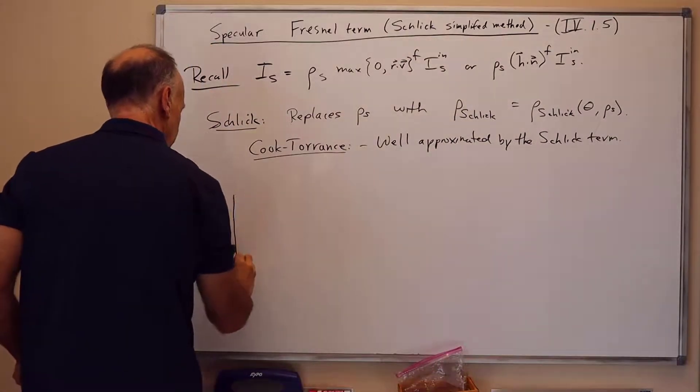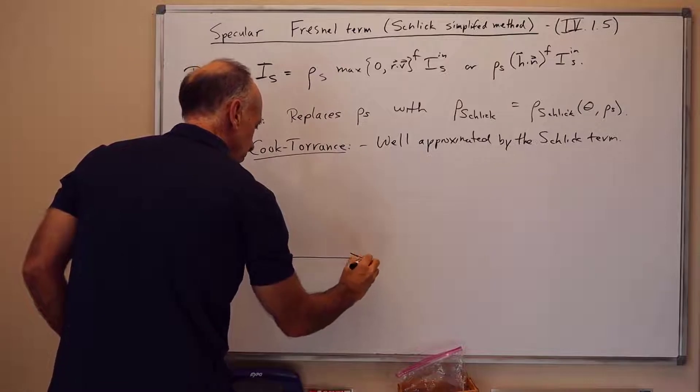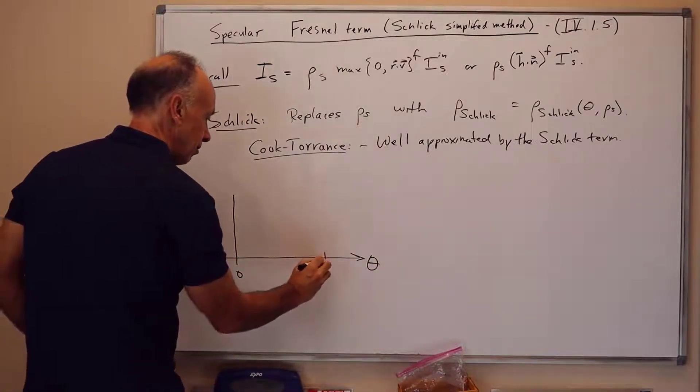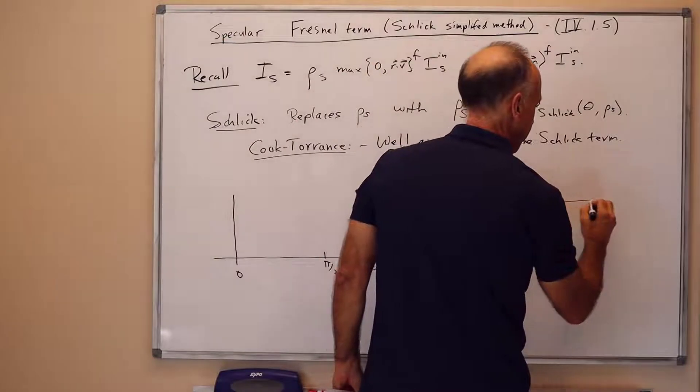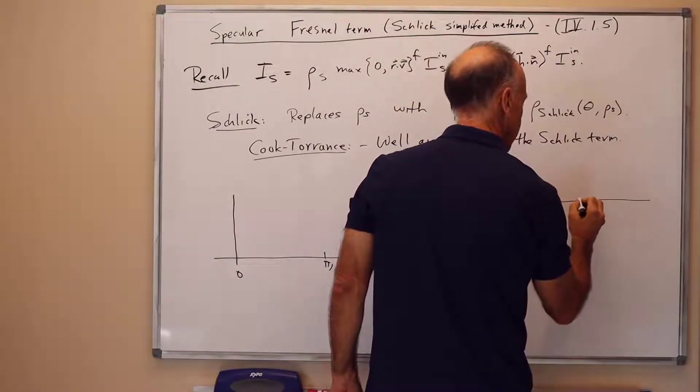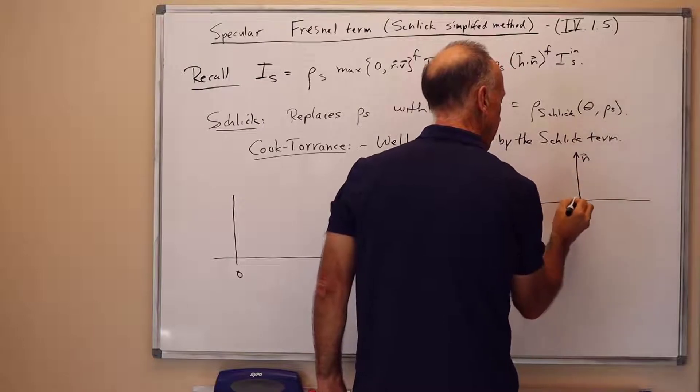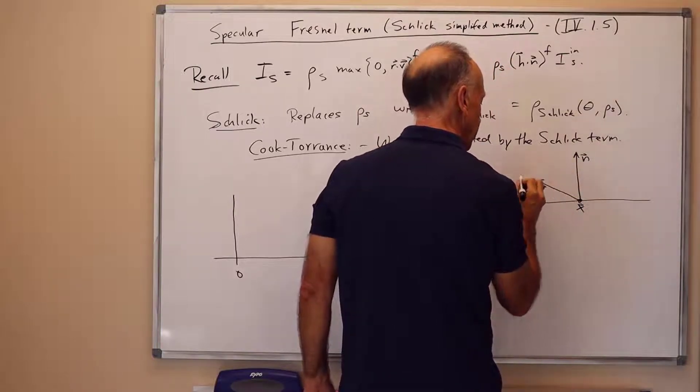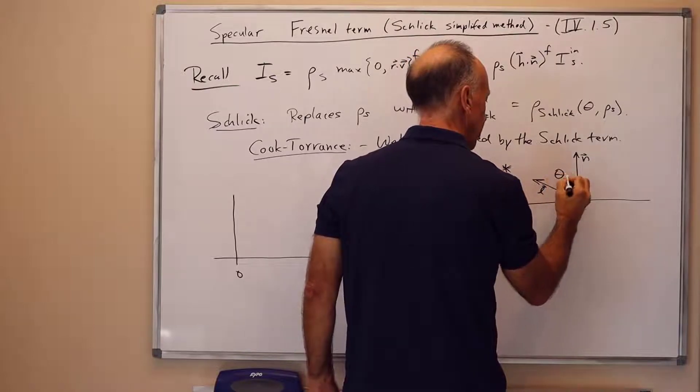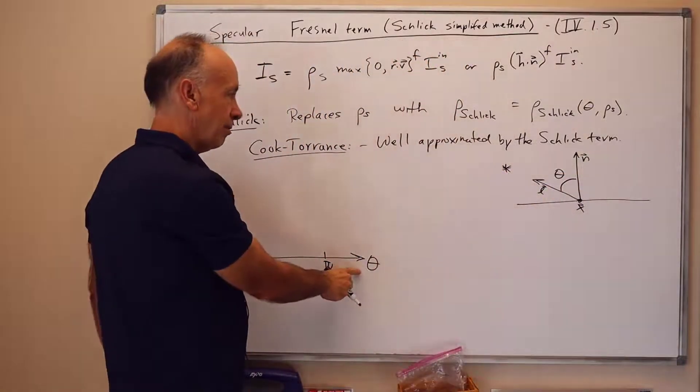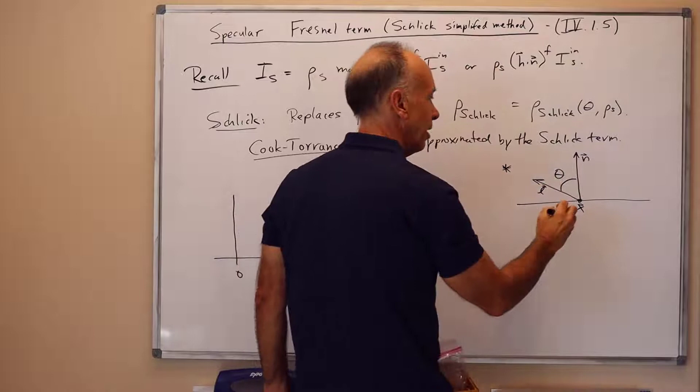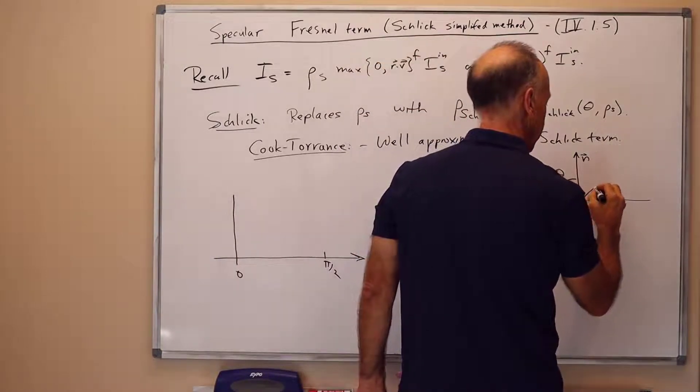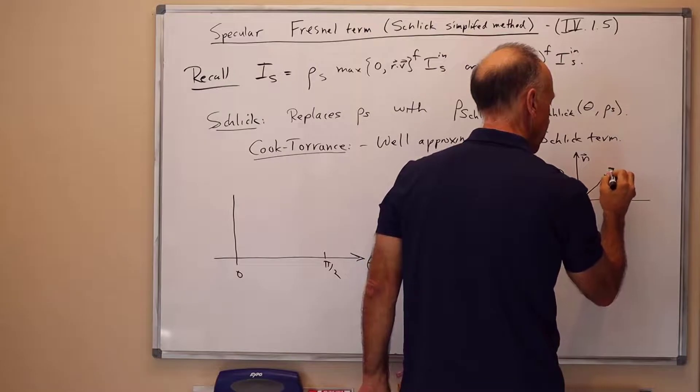So let me tell you what the Schlick term is. First of all, graphically, what does it look like? I'll have the, think of theta going from 0 to pi halves. And theta is the theta that we used to have. I should draw this also here. We've got the point x on the surface. It's got a normal vector n. It's got a L vector pointing towards the light source. And this is the angle theta right there. So theta is, can go to be up to pi halves if the viewer is way off to the, if the light is way off to the side. The viewer won't come into this,